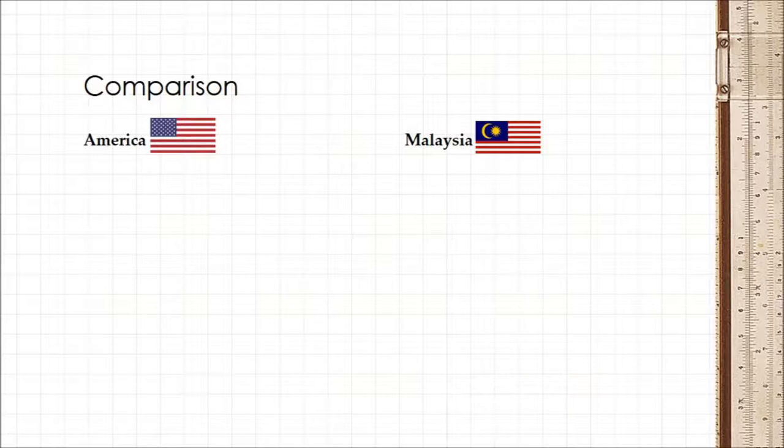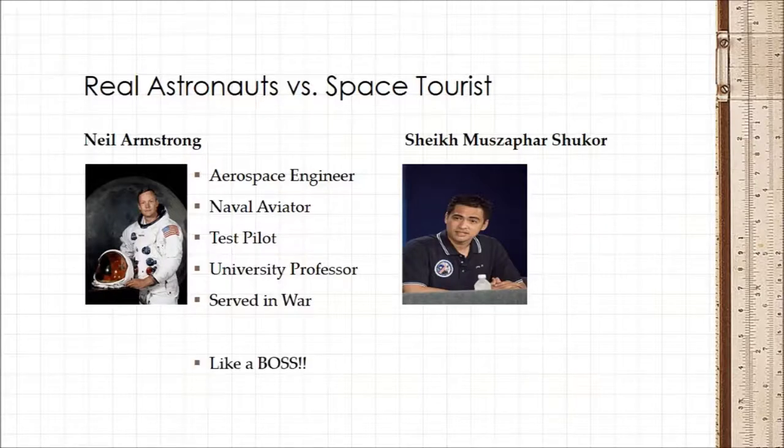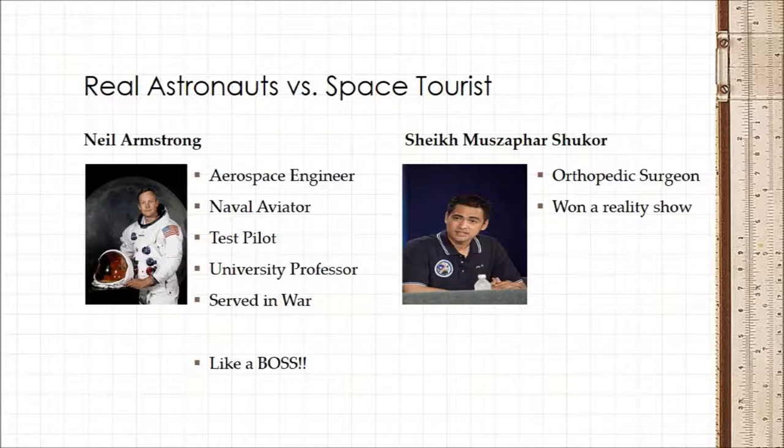First, Neil Armstrong and Buzz Aldrin were full-fledged astronauts. Neil Armstrong was an aerospace engineer, a naval aviator, a test pilot, and a university professor. He served during the Korean War. He wasn't an orthopedic surgeon that won a reality TV show and was a part-time model.